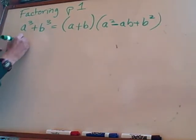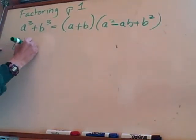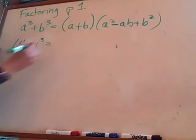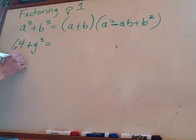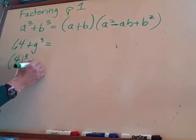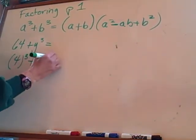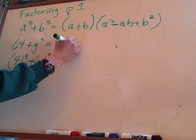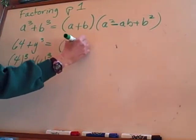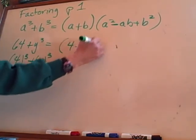Our next example is 64 plus y cubed. Is 64 a perfect cube? Yes, because I could write it as 4 cubed, right? 4 times 4 times 4. And this is the same thing as y cubed. So let's factor that out. What's my a going to be? 4. Plus b is y.